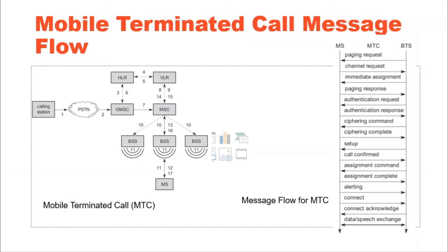Step 7: the GMSC can now forward the call setup request to the indicated MSC. From this point, the MSC is responsible for all the steps. Steps 8 and 9: the MSC requests the current status of the MS from the VLR.